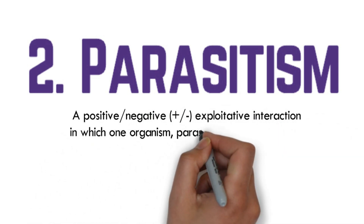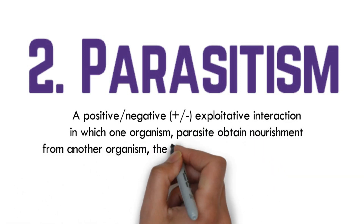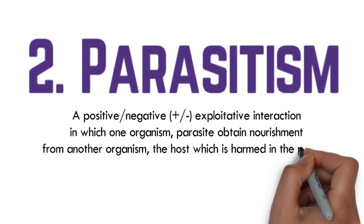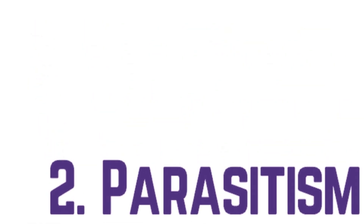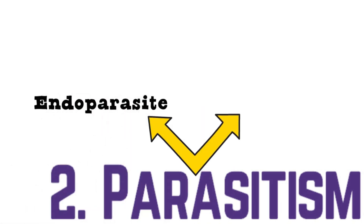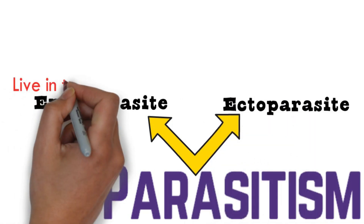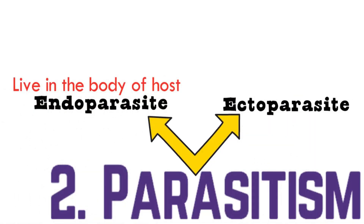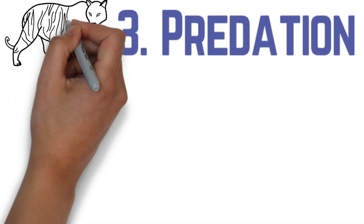The second component is parasitism. Parasitism is a positive-negative exploitative interaction in which one organism, the parasite, obtains nourishment from another organism, the host, which is harmed in the process. It can be divided into two types: endoparasite, which lives inside the body of the host, and ectoparasite, which feeds on the external surface of the host.